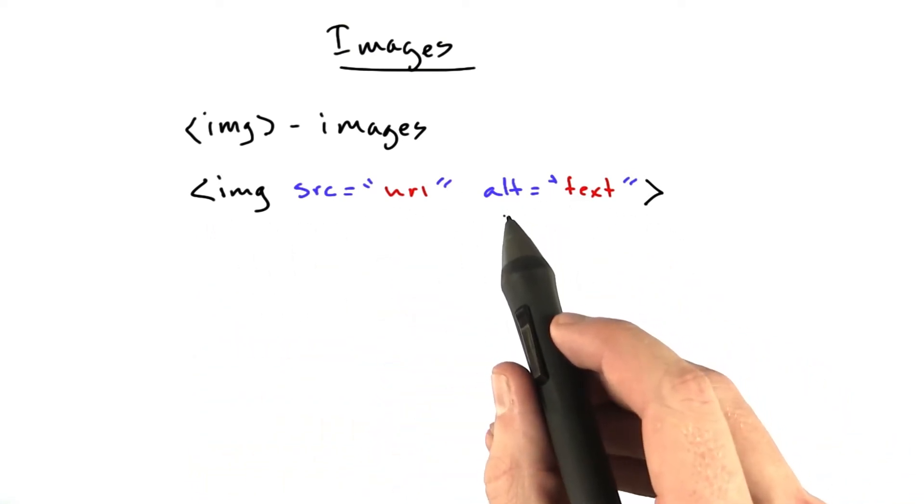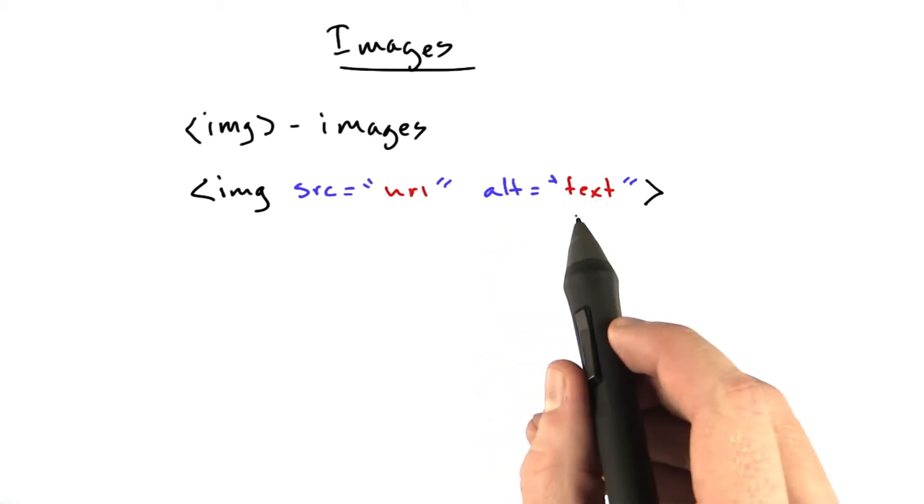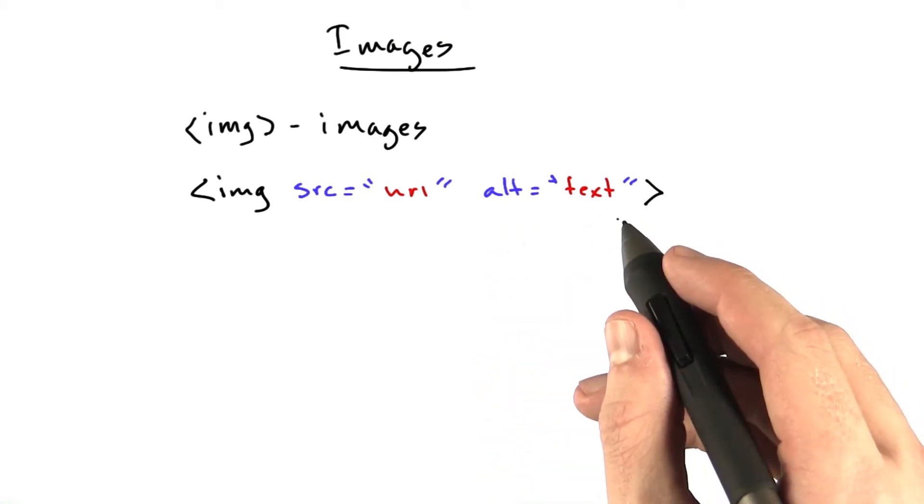And then there's another attribute called alt, which stands for alternate, and this is text that gets displayed when the image doesn't load.